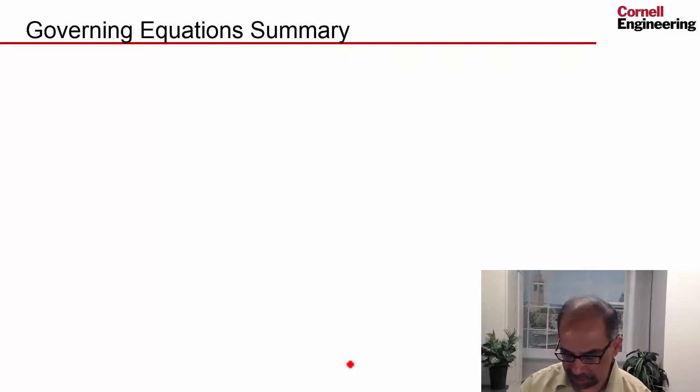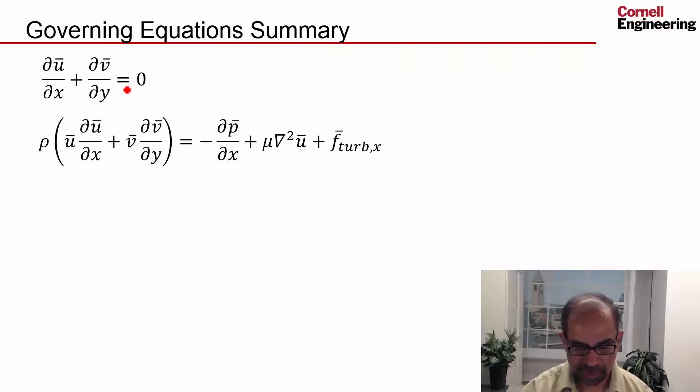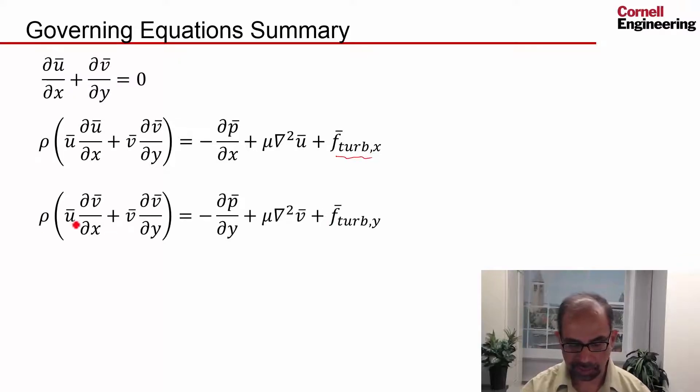Let's take a look at the summary of the governing equations. We have Reynolds average continuity, Reynolds average Navier-Stokes in the x-direction, and we get this extra term, which is due to the Reynolds stresses. And similarly, you get Reynolds average Navier-Stokes in the y-direction. And to calculate these two terms, one needs the eddy viscosity.